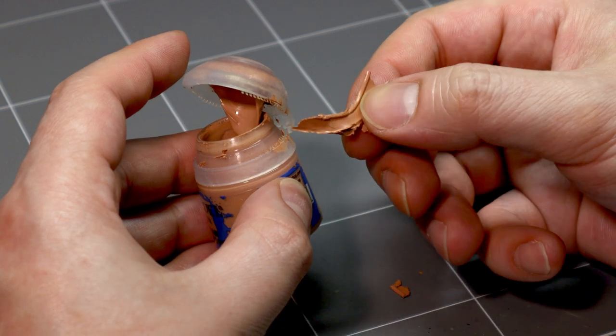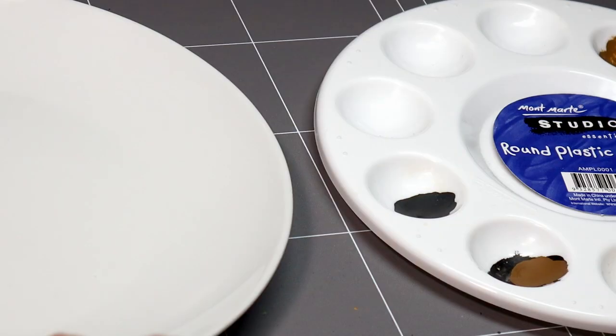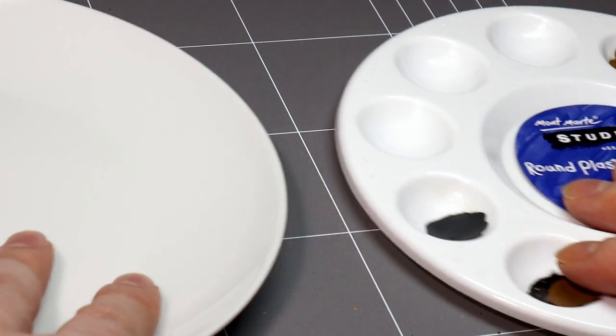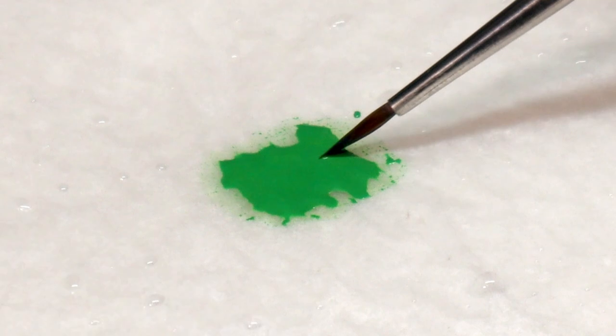Painting out of the pot is a surefire way to get that gunk buildup among other things, which is why you should always use a palette. Now there are lots of options for a palette so you need to find out what works for you, but I highly recommend a wet palette of some description.